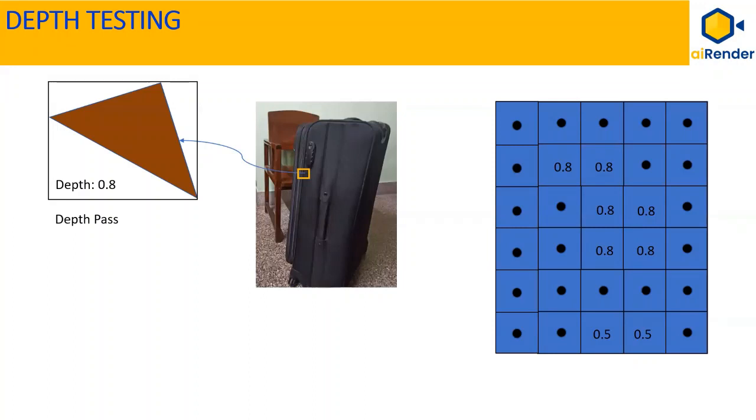Let's consider a triangle from the chair that overlaps with the trolley back towards the middle of the scene as shown. Since this triangle is the one to reach depth testing first, it passes depth test and mapping locations in depth buffer are marked as 0.8.